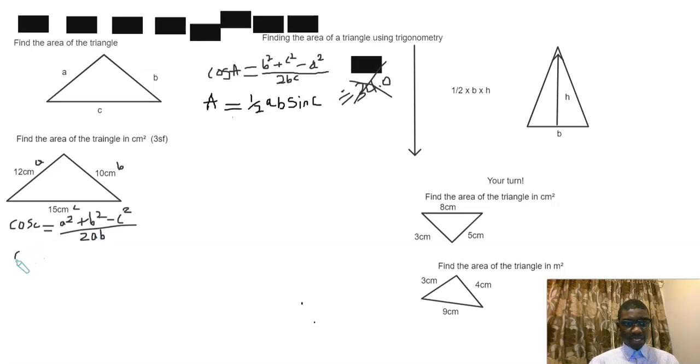Okay, now let's put some numbers into this equation. So a² is 12, so 12² + 10² - 15² over 2 × 12 × 10.